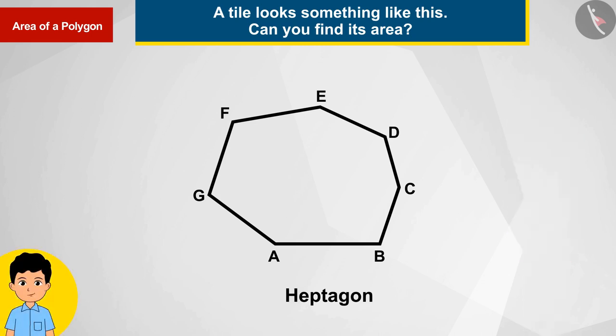A student of the class, Sonu, solved this question in this way. He made the diagonals of this heptagon from vertex A, and by doing so he got five triangles. He thinks that why not take the sum of the area of all these triangles which will be equal to the area of heptagon.